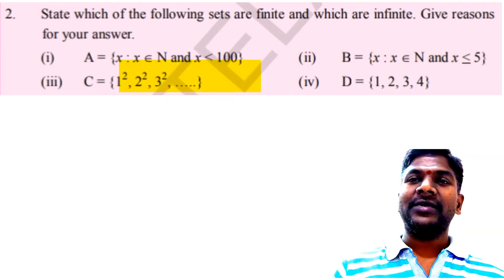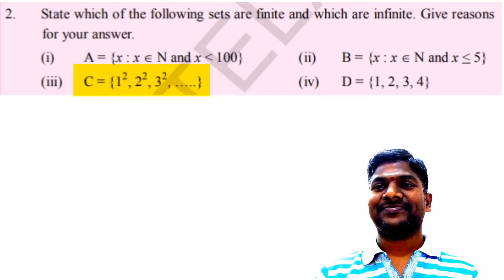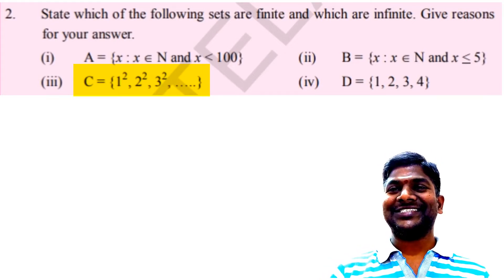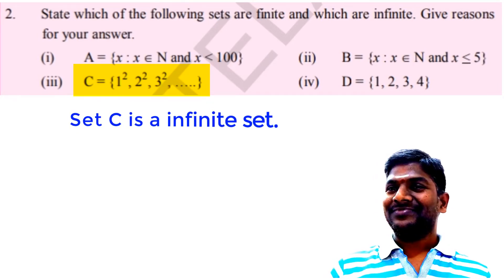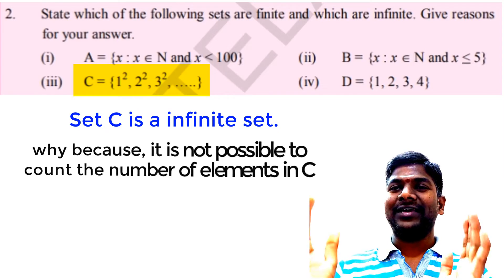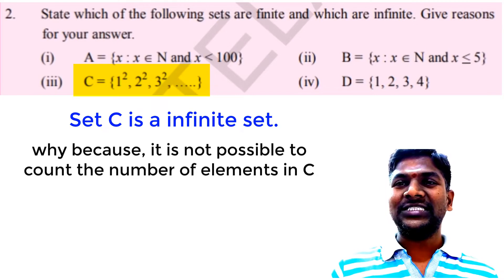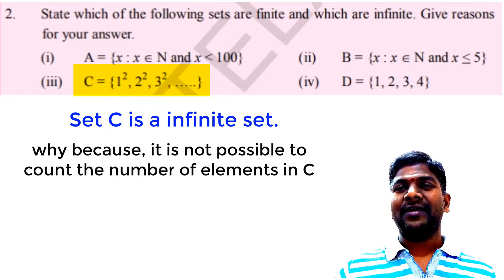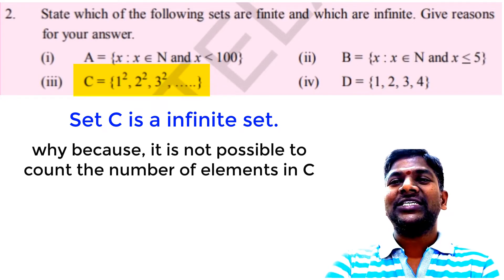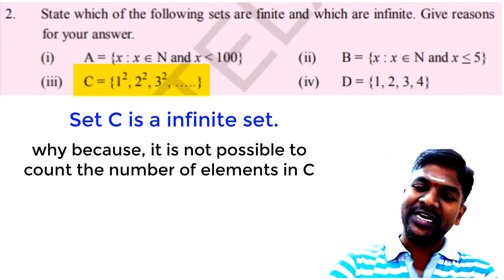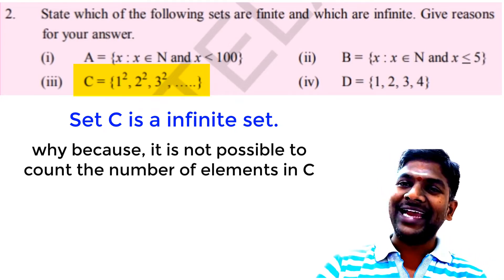The third question: C = {1², 2², 3², 4², ...}. Is it a finite or infinite set? It is an infinite set, because the dashes indicate that the set is continued — the last element is not determined. It is not possible to count the number of elements in set C. Therefore, C is an infinite set.